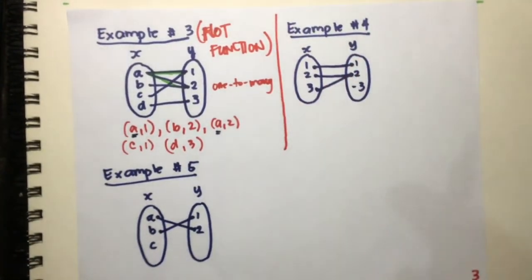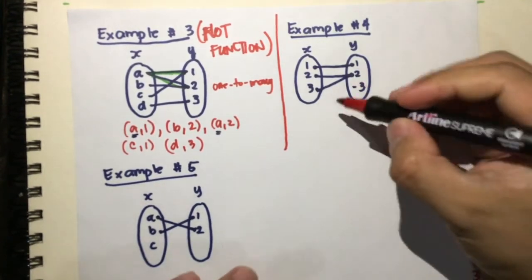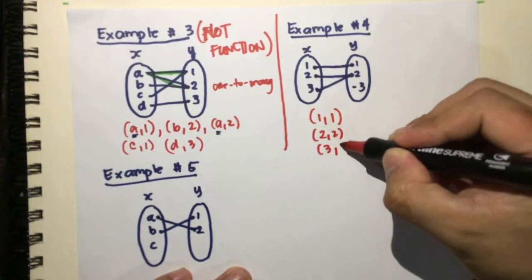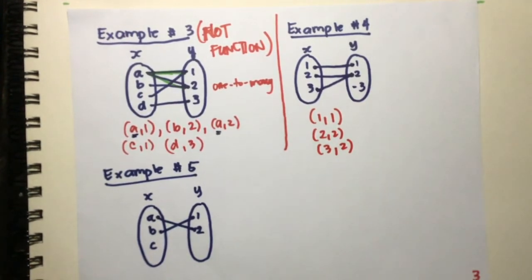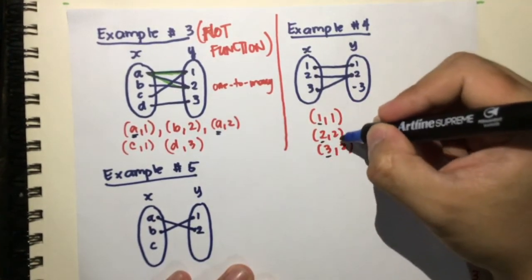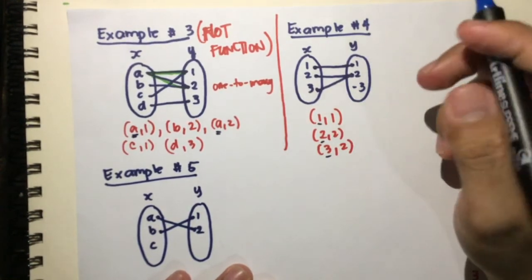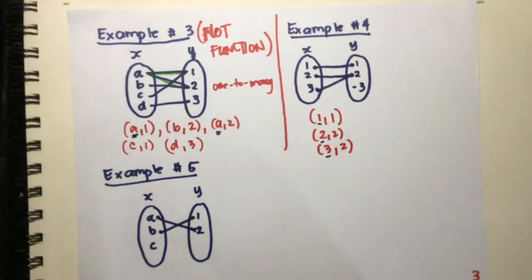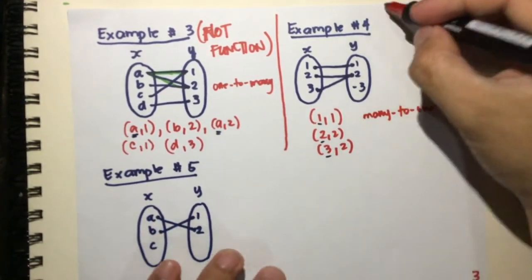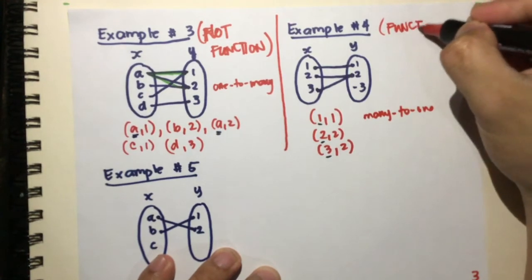Now let's have example number four. In this mapping diagram, identify the ordered pairs: 1 and 1, 2 and 2, and 3 and 2. Checking our restriction — the x-values are 1, 2, and 3, and the y-values are 1, 2, and 2. Two and three share the same y-value, but that's not a restriction. This is a many-to-one relation, so this example is a function.